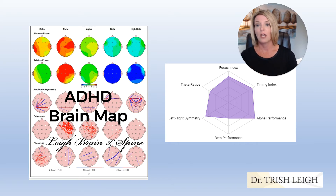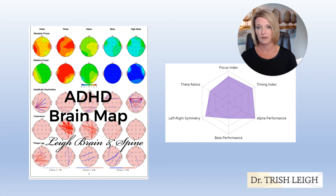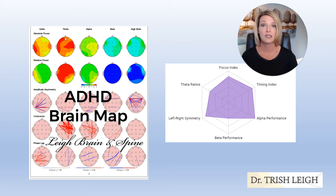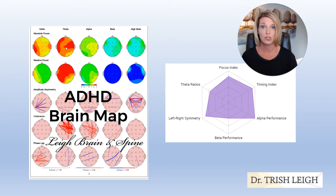Let's get into the brain map for ADHD. Especially if you've seen my video on the optimal brain map pattern, you will see a stark difference. A typical, optimal, or normal brain map is all green. If someone struggles with ADHD, they're born with their brain using too much theta — slow brain processing speed. It's called a slow wave disorder, and we know it's neurodevelopmental in nature, meaning people are born with a brain that is going too slow.